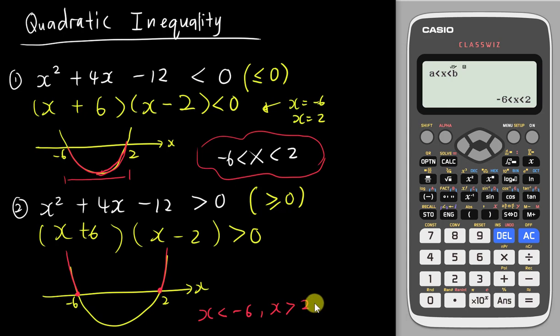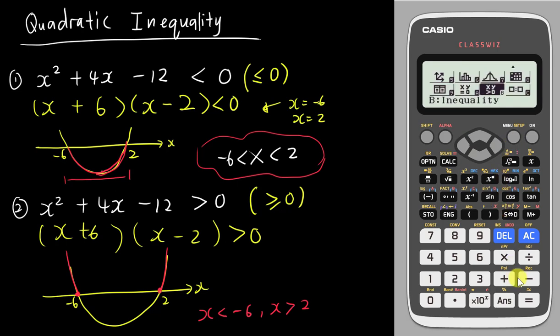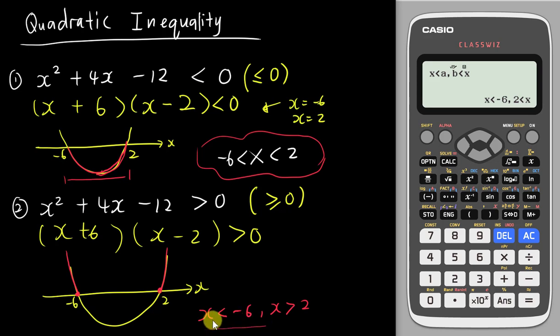If I use the calculator, can I get the same result? I go back to polynomial and choose the greater than option, which is number 1. Then I insert my values again, which is 1—I already inserted just now. You can see my answer is exactly the same: x is less than negative 6 and x is bigger than 2.